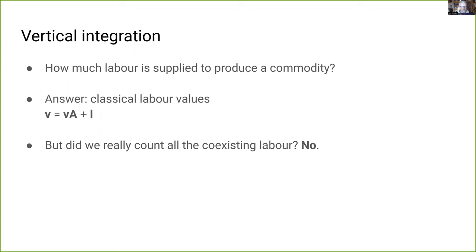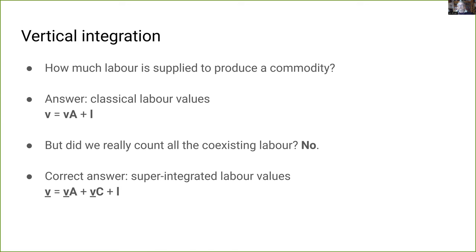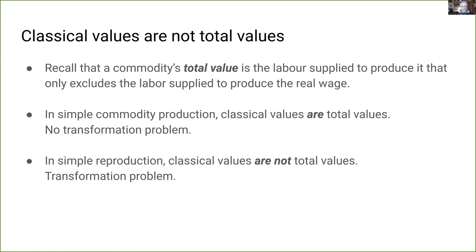In linear algebra, super-integrated values are expressed as an infinite series where the technology matrix A is augmented by the capitalist consumption matrix C. The final form shows that total labor supplied is the sum of living labor, plus indirect labor replacing means of production used up, plus super-indirect labor replacing the capitalist consumption goods consumed. So returning to our original question: classical values don't count all the labor — they miss some. If we want the total labor supplied to produce a commodity in the institutional circumstances of a capitalist economy, the answer is super-integrated values.